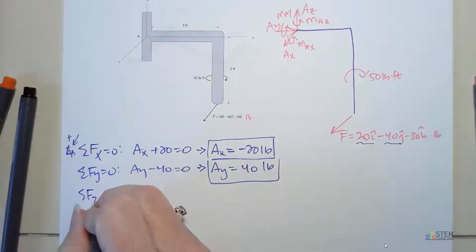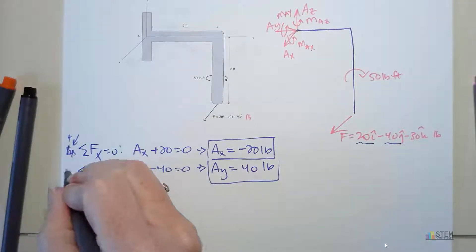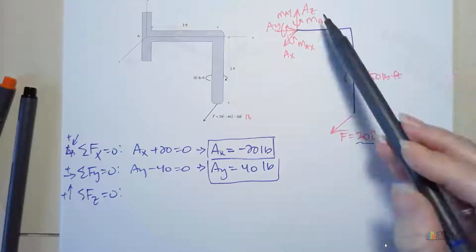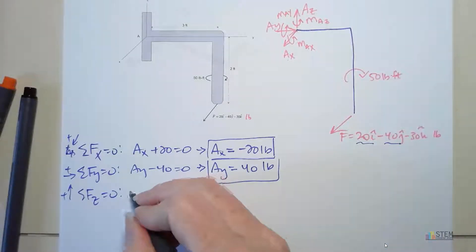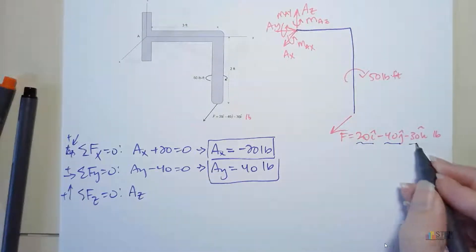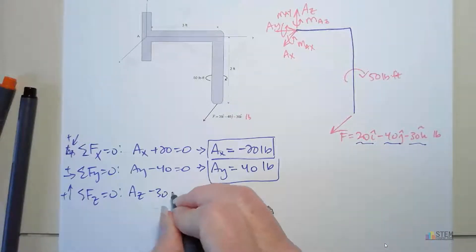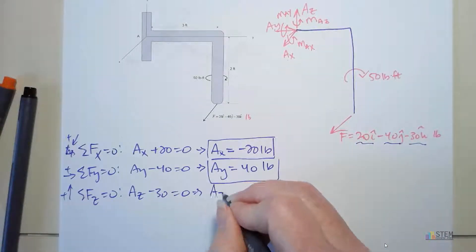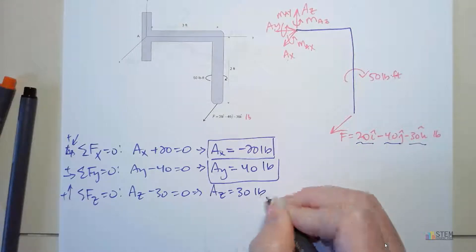And last force equation. Let's look at the Z direction. By the way, to the right's positive and then up's positive. In the Z direction, we've got AZ. And we also have negative 30. So AZ is going to be 30 pounds.